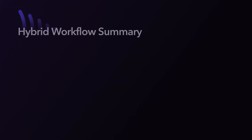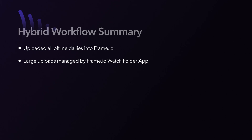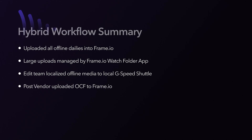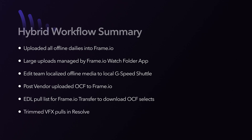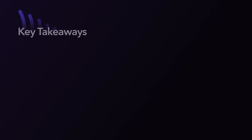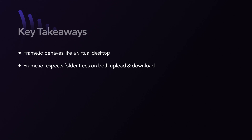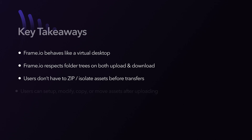Let's re-examine this workflow. First, we localized all the dailies into Frame based on an ideal air gap workflow. For large uploads, we used the Frame.io Watch Folders tool to upload assets to specific directories, mirroring the same structure that's on our original SAN. The editors and AEs downloaded the offline material from Frame to a local disk and edited on an air-gapped computer. We also had the post house upload all the OCF to Frame.io. The AEs exported an EDL or XML and uploaded that to the Frame Transfer tool, which pulled down just the selected takes. We trimmed those in Resolve and published the trimmed clips back to Frame, sharing them with the VFX vendors. Key takeaways: Frame.io behaves like a hyper-secure virtual desktop; it respects folder trees on both upload and download; users don't have to zip or isolate assets before sending or receiving; and users can set up, modify, copy, or move assets after they're already in the cloud.